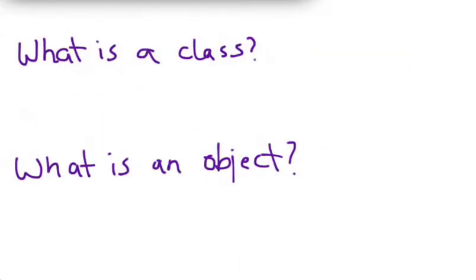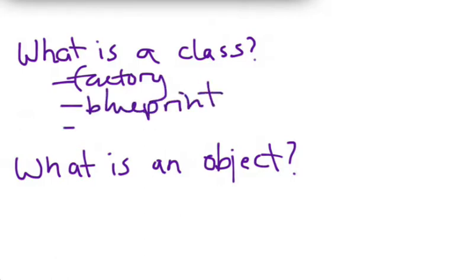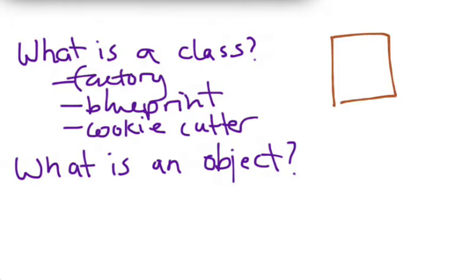The first question you want to ask is what is a class? You can think of a class as being like a factory, or a blueprint, or a cookie cutter. The reason we talk about it this way is that what a class really does is describe how to create objects. So it's really a set of instructions. You might think of it as being almost like a recipe.